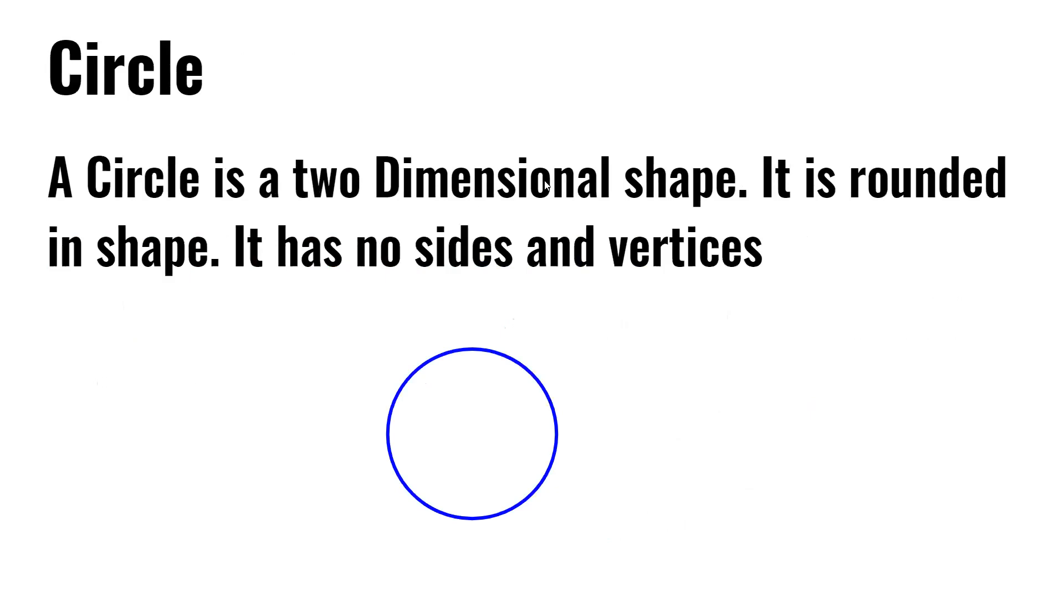A circle is a two-dimensional shape. It is rounded in shape. It has no sides and vertices.